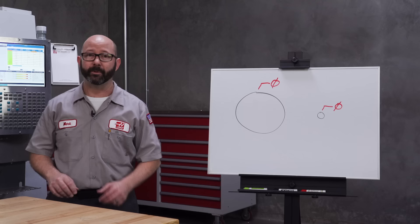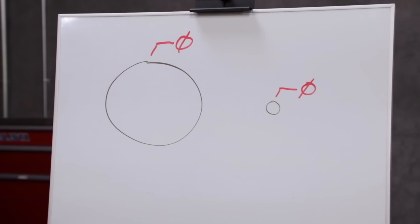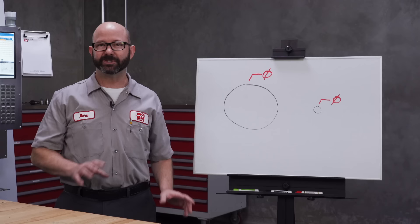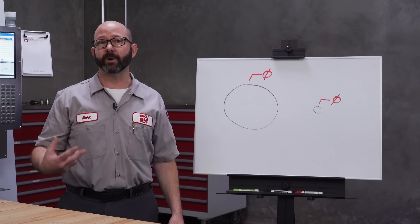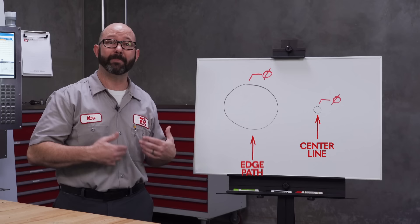Now this happens because our tool thinks that it's going this far when it's actually going this far. If you see this, and you will eventually, it's because our program feed rates are based off the path the center line of the tool follows. And not the path that the edge of the tool follows, which is much larger.